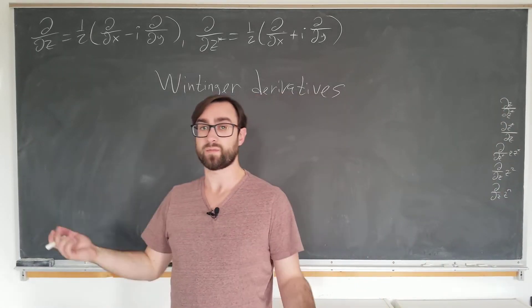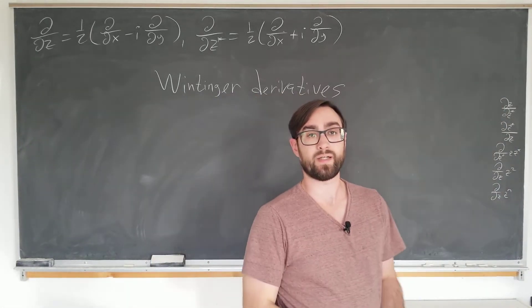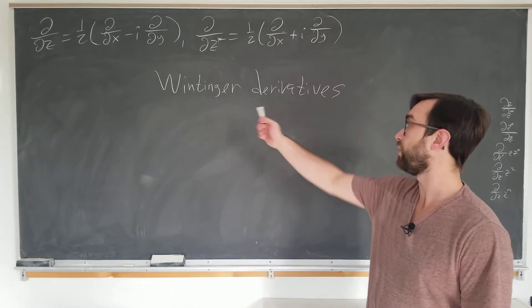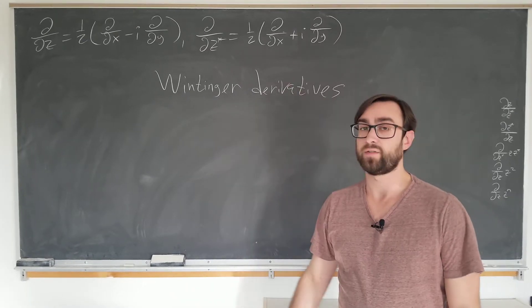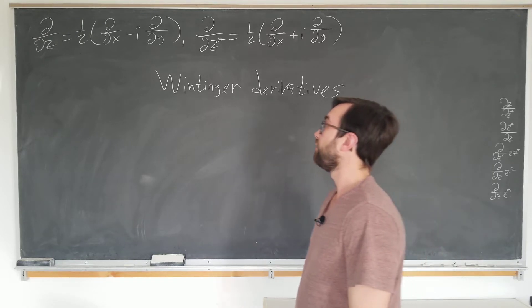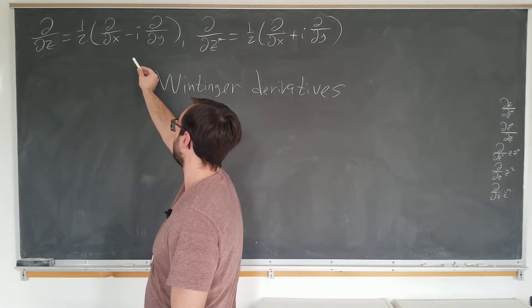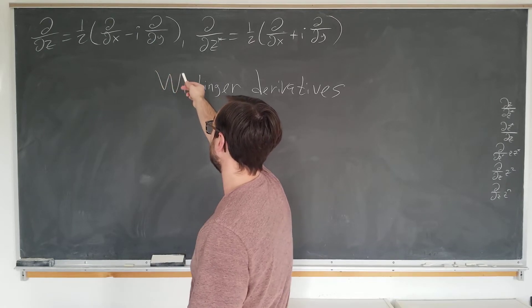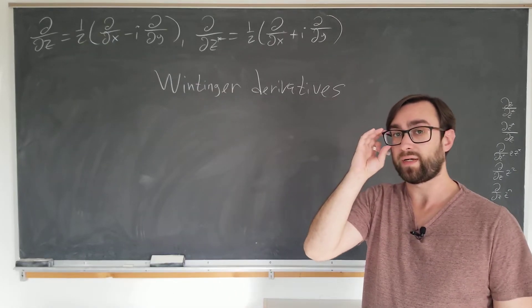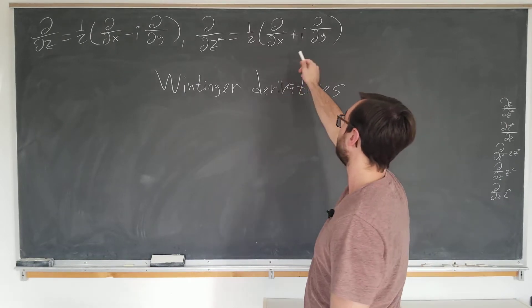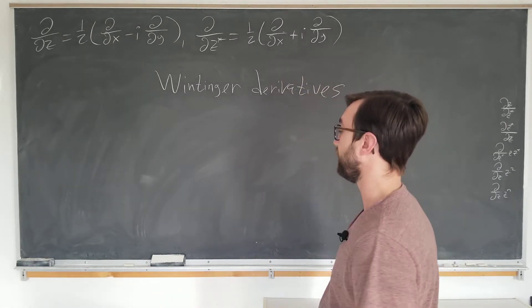Hi everyone, welcome back to Mostly Math. Today we'll be investigating a few elementary properties of the Wirtinger derivatives which we introduced in a previous video. They're defined as the differential operators d by dz is one half d by dx minus i d by dy, and the conjugate operator d by d z star is one half d by dx plus i d by dy.